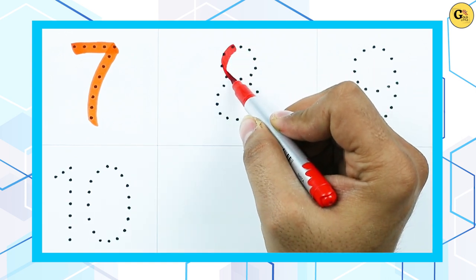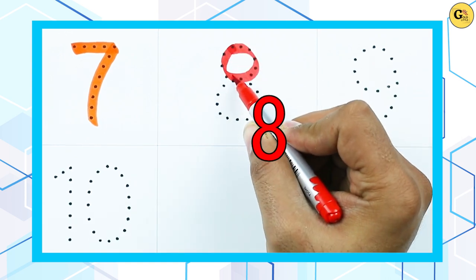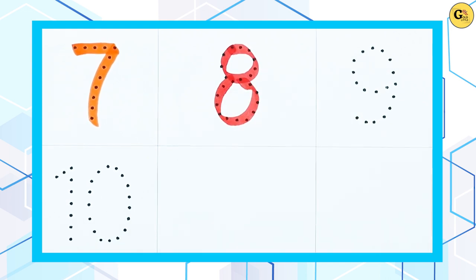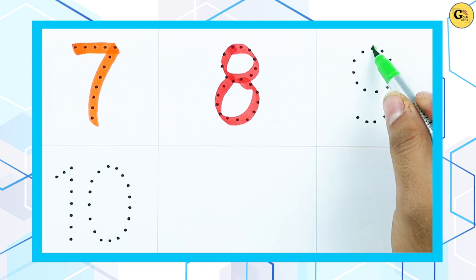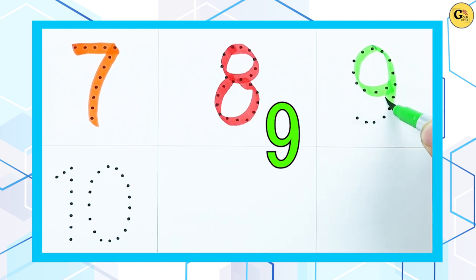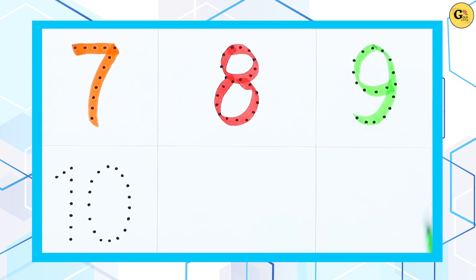Number 8 with red color. It's number 8. Number 9 with green color. It's number 9.